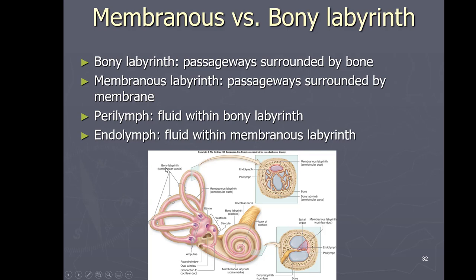Looking at the membranous versus bony labyrinth: within the cochlea and semicircular canals there's a pinkish membrane — that's the membranous labyrinth. Everything outside of that membrane would be the bony labyrinth because it's surrounded by bone. In cross-section you can see areas surrounded by bone as the bony labyrinth, and the area in the middle surrounded only by membrane as the membranous labyrinth.